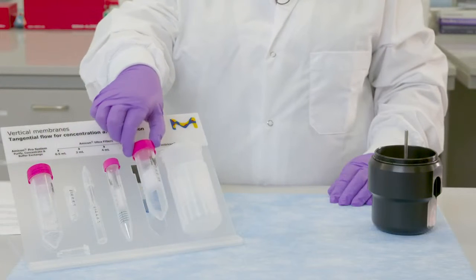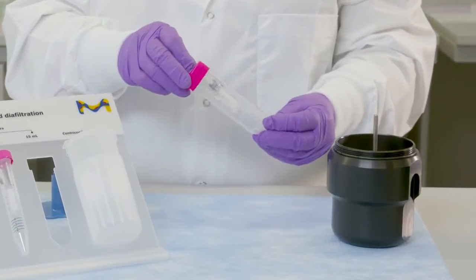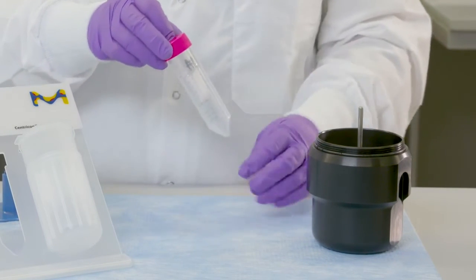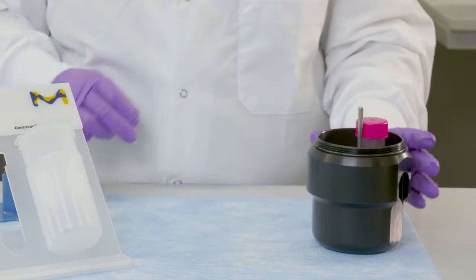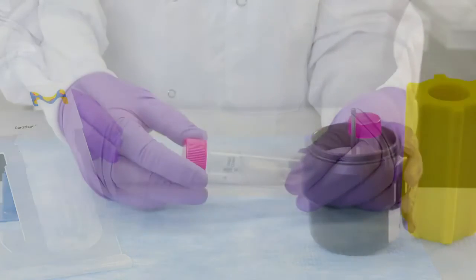The Amicon Ultra 15 uses a centrifuge with swinging bucket rotor or fixed angle rotor with wells and carriers that can accommodate 50 mil tubes. For the Amicon Ultra 15, use a reduced volume when using fixed angle rotor to avoid leakage through the cap.